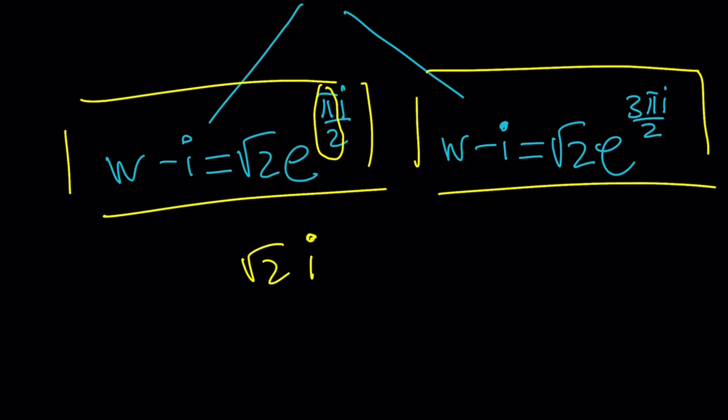Because i has a modulus, I mean an argument of pi over 2. This is i. This is just i. And root 2i is just going to be that times root 2. So from here, we can find w easily. w is going to be 1 plus root 2, all multiplied by i.